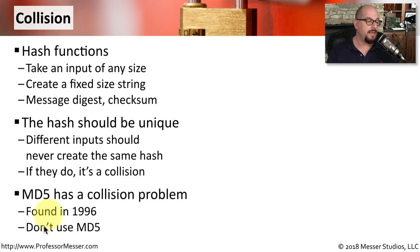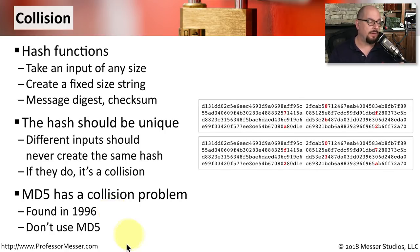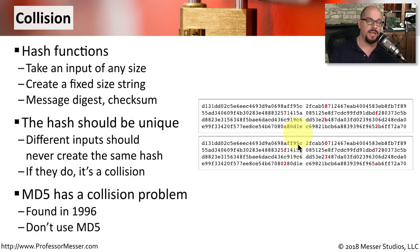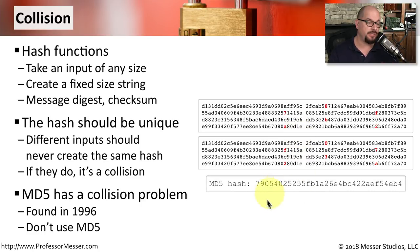We had an example of this with the MD5 hashing algorithm, where a collision was found in 1996. Because of that, we don't tend to use MD5 for hashing these days. Here's an example of that collision with MD5: these are two different pieces of information, almost identical except for the items highlighted in red. Those are the only differences between the two messages, but if I use MD5 to hash them, I get exactly the same MD5 hash — and that is our collision.